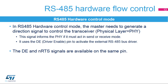For serial half-duplex communication protocols like RS-485, the master needs to generate a direction signal to control the transceiver. This signal informs the physical layer if it must act in send or receive mode. In RS-485 mode, a control line is used. The driver-enable pin, named DE, is used to activate the external transceiver control. DE shares the pin with NRTS.